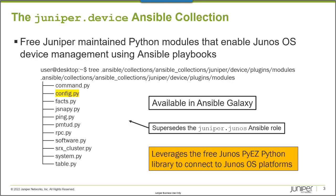The Juniper.device Ansible Collection is a series of freely available Python modules curated by Juniper Networks, made freely available inside Ansible Galaxy. It also requires the freely available Junos PyEZ Python library to handle connecting to your managed Junos platforms. This Learning Byte will focus on using the Config Python module included in the Juniper.device Ansible Collection to compare active and previously active configurations.